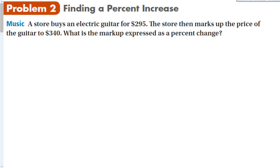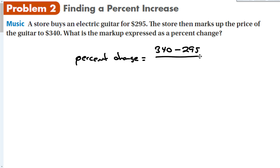A common example for finding percent increase is a markup. A music store buys an electric guitar for $295 and marks it up to $340. What is the markup expressed as a percent change? Percent change equals (340 minus 295) over 295 — the bigger number minus the smaller, divided by where you started (the original amount). That's 45 over 295, which gives approximately 0.15, or 15%.